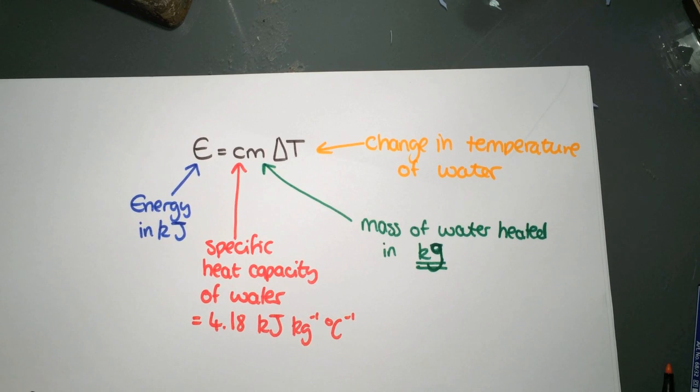When we're looking at combustion reactions, we can calculate the energy that is released during the reaction using the equation E equals Cm delta T, which you can find in the front of your data book.